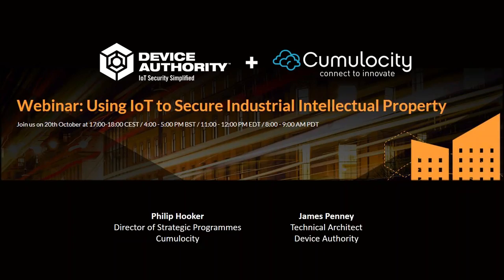James is a technical architect at Device Authority. He has worked in security for over 10 years, architecting and deploying complex security and encryption projects for organizations across all industries, including financial, pharmaceutical and UK agencies. He has also designed several apps which are featured on the Apple Store.